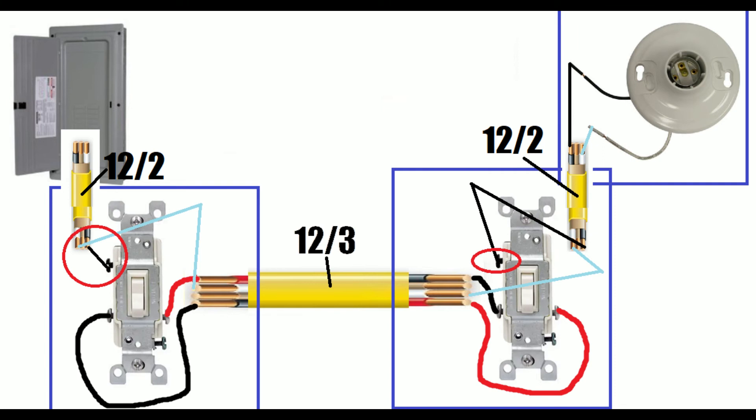We refer our constant hots as something that's not switched. Before the switch, you would have a constant hot. After your switch, you would have what you call the switch leg.